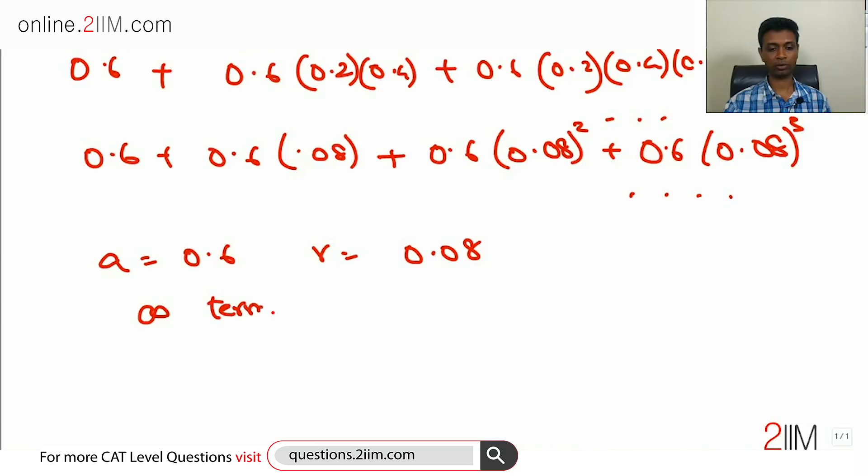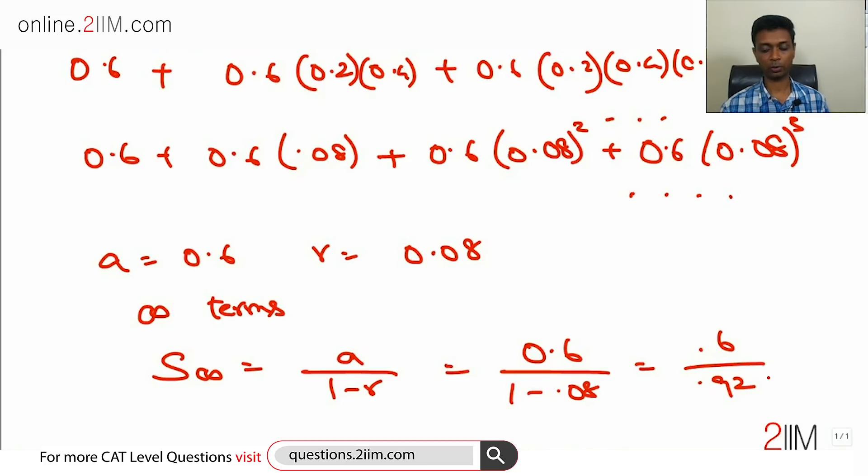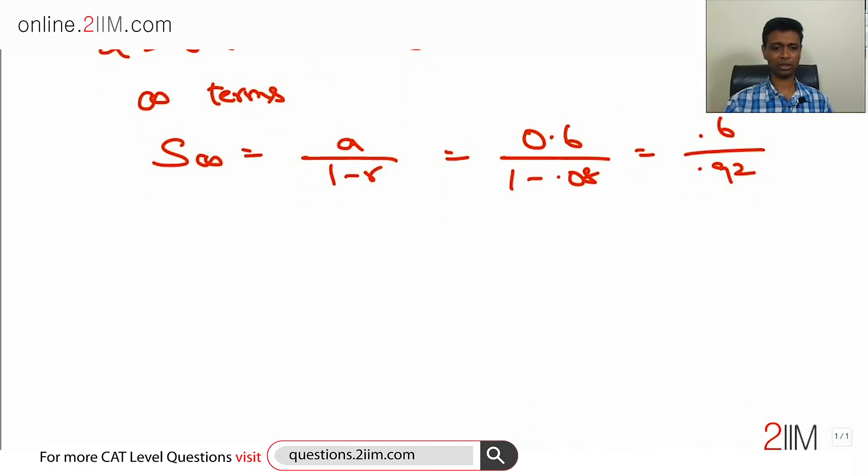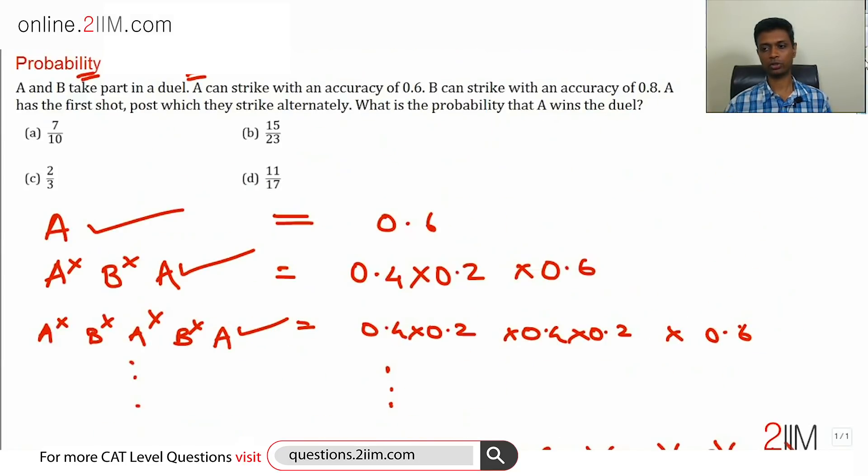Sum to infinite terms is a/(1-r), which is 0.6/(1-0.08), which is 0.6/0.92. This simplifies to 60/92 or 30/46 or 15/23. The probability of A winning this duel is 15/23, so the choice is 15/23.